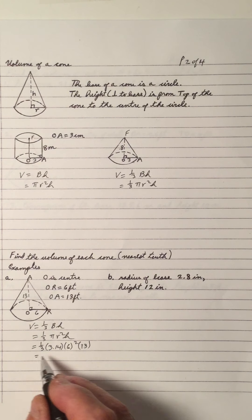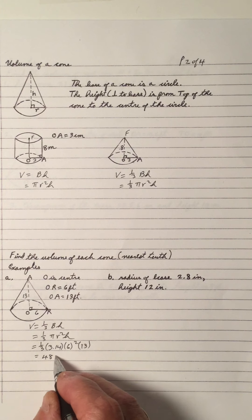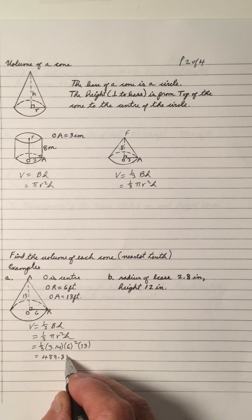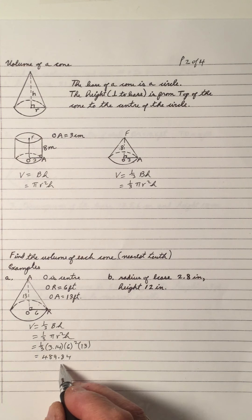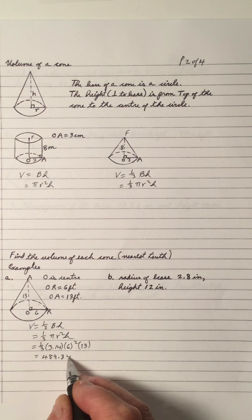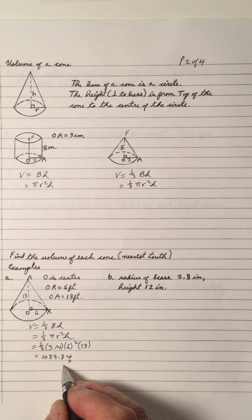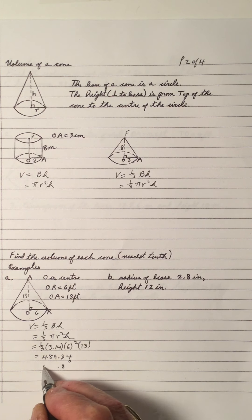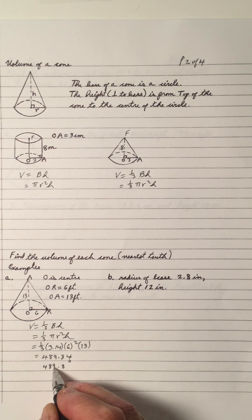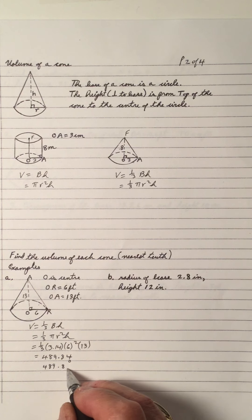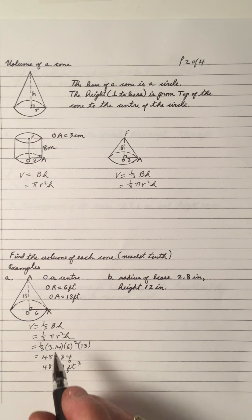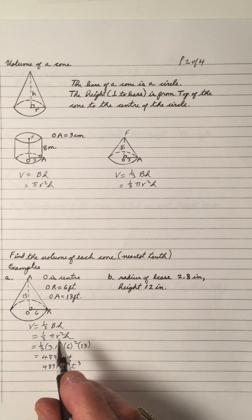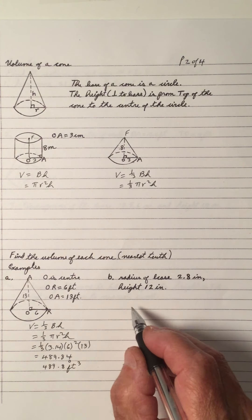If you multiply that out, you will get 489.84. We're rounding to the nearest tenth, so that's the tenths place — this 4 is less than 5, so we do not change the 8. So it's 489.8. And it's feet, so the volume is cubic feet. Again, the cone is one-third of the area of a cylinder.